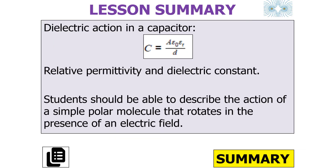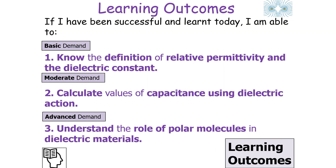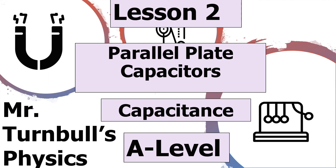In today's lesson we've learned that for dielectric action in the parallel plate capacitor, C = Aε₀εᵣ/d, which links to the relative permittivity and the dielectric constant. We should be able to describe the action of simple polar molecules that rotate in the presence of an electrical field. I hope you've enjoyed today's lesson looking at the definition of relative permittivity and the dielectric constant, calculating values of capacitance using dielectric action, and understanding the role of polar molecules in dielectric materials, as part of the capacitance topic in AQA A-level physics.